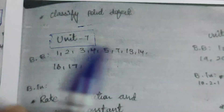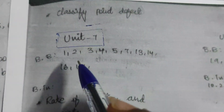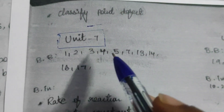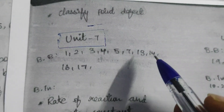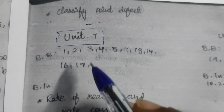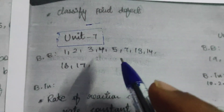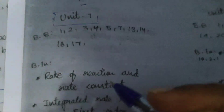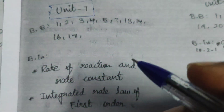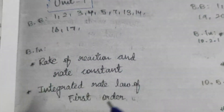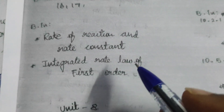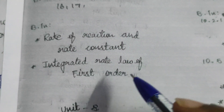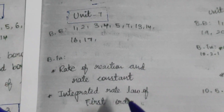Unit 7 book back: 1, 2, 3, 4, 5, 7, 13, 14, 16, 17. Booking: Rate of Reaction, Rate Constant, Integrated Rate Law, First Order. This is Unit 7.